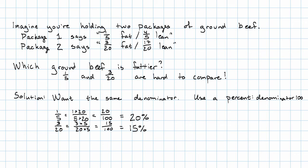Which one is fattier? Package one is fattier. Since twenty out of a hundred, twenty percent, is more than fifteen out of a hundred, fifteen percent.